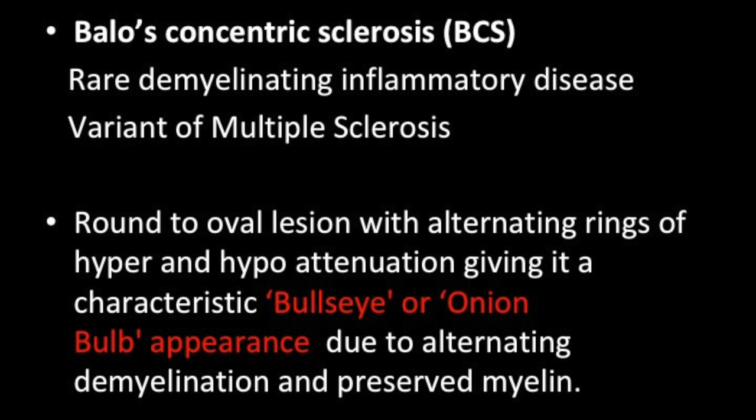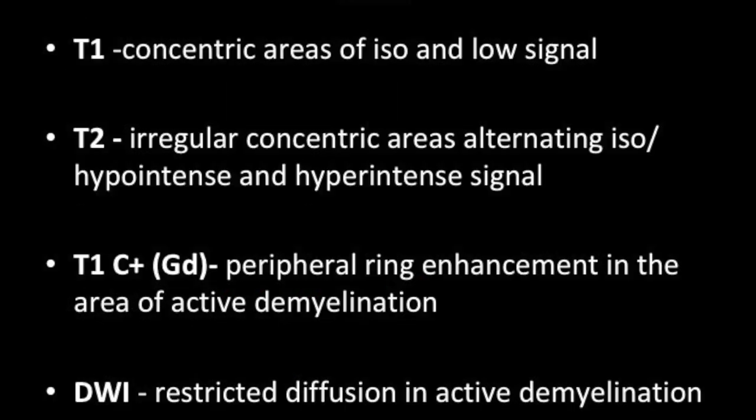In this condition, you get round to oval lesions with alternating rings of hyper- and hypo-attenuation, giving it a characteristic bull's eye or onion bulb appearance due to alternating layers of demyelination and preserved myelin.